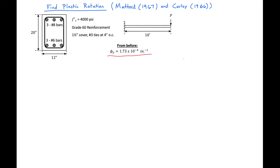Our first step will be to find our plastic hinge length, which is LP. We'll use the expression developed by Matic and Corley which is LP equal to 0.5D plus 0.05Z.